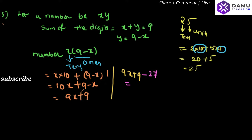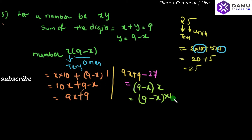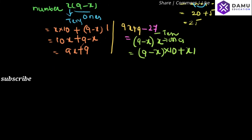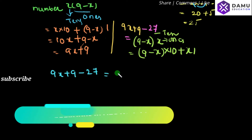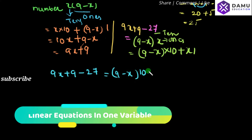The digits are reversed, so the reversed number is (9 minus x) followed by x. The expanded form for the reversed number is (9 minus x) into 10 plus x into 1. So the equation becomes: 9x plus 9 minus 27 equals (9 minus x) into 10 plus x.